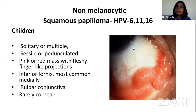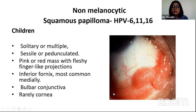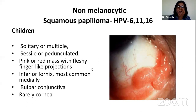There are certain non-melanocytic lesions which are great mimickers of OSSN. One of these is squamous papilloma, attributed to human papillomavirus 6, 11, and 16. They have a slightly different presentation in children versus adults. In children, they can be solitary or multiple, sessile or pedunculated, appearing as a red mass with fleshy finger-like projections, most often in the inferior fornix and medially.